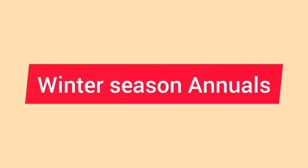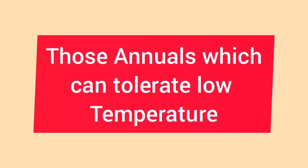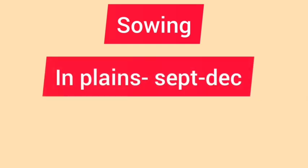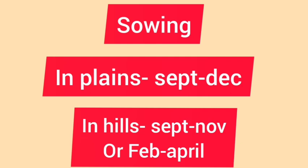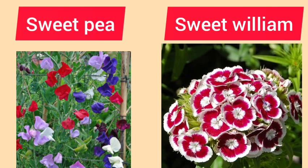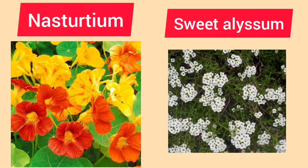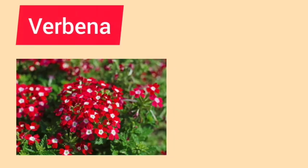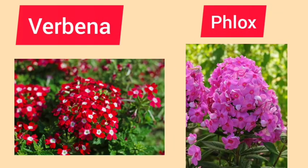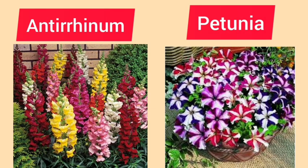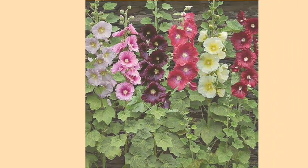Winter season annuals are those annuals which can tolerate low temperature. The sowing is done in plains in September to December, and in the hills it is done in September to November or February to April. Examples include Sweet Pea, Sweet William, Nasturtium, Sweet Alyssum, Verbena, Phlox — all of which can be used as pot flowers — Antirrhinum, Petunia, and Hollyhock, which is very helpful for screening purposes.